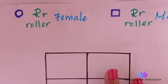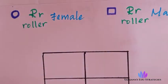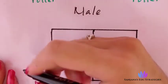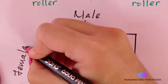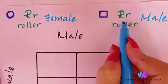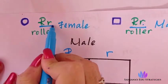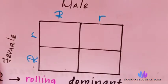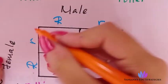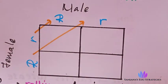In the Punnett square, you will write the male parent genes on one side and the female parent genes on the other side. The male parent gene is capital R and small r (Rr). The female is also capital R and small r (Rr). Now we are going to cross them in this direction.